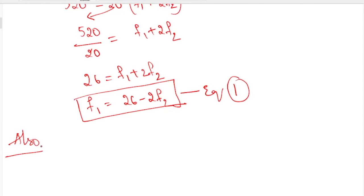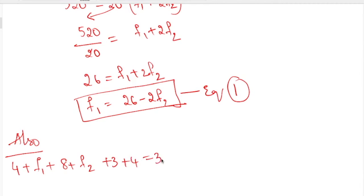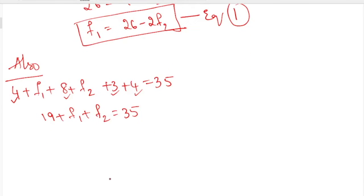We also know that all frequencies must add up to n equal to 35. So: 4 plus f1 plus 8 plus f2 plus 3 plus 4 equal to 35. Adding the known frequencies: 4 plus 8 plus 3 plus 4 equals 19. So 19 plus f1 plus f2 equal to 35, which gives f1 plus f2 equal to 16. This is equation 2.